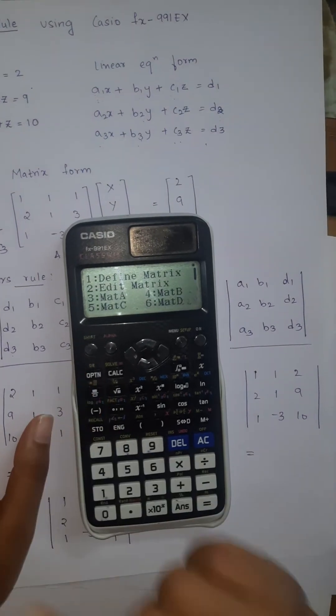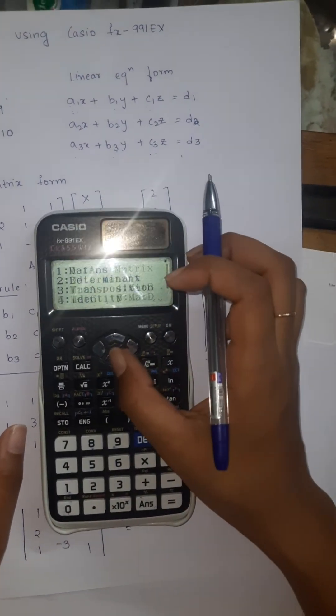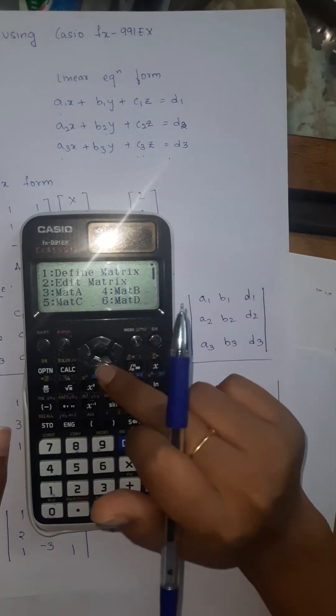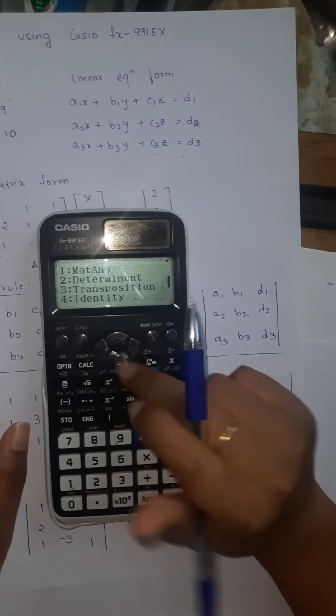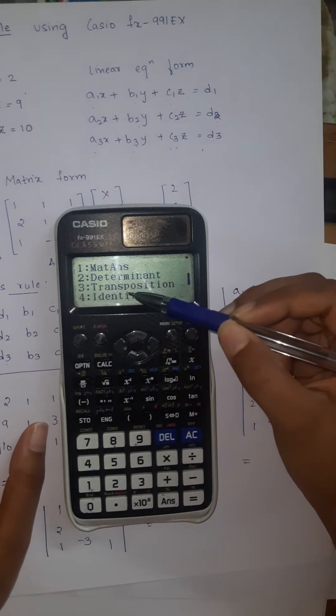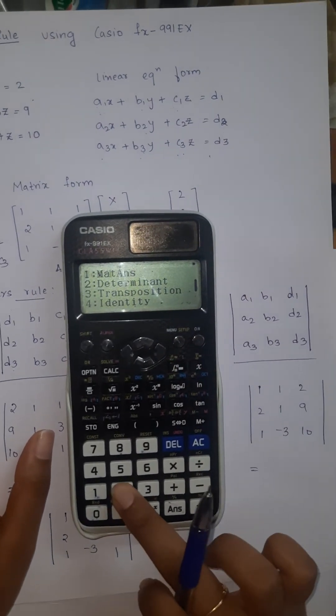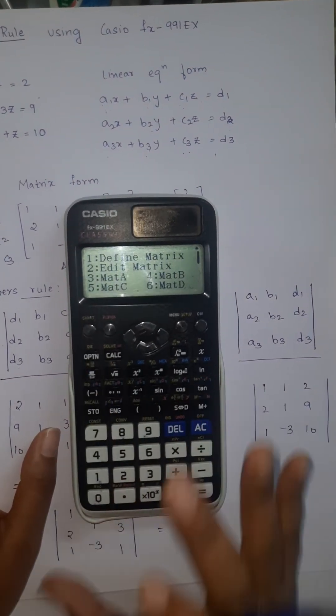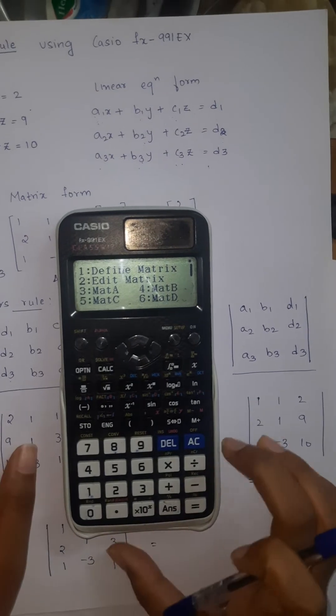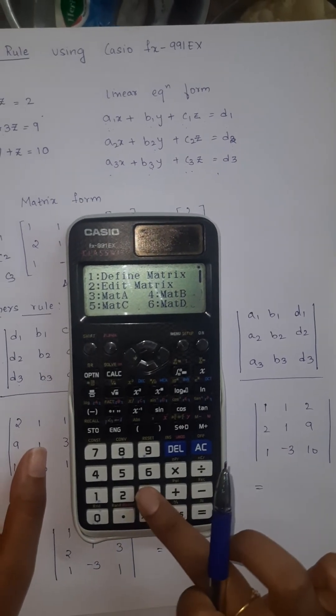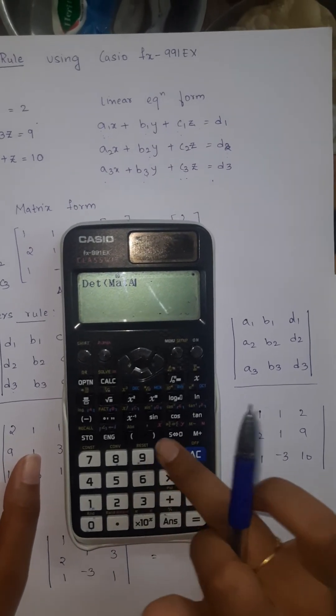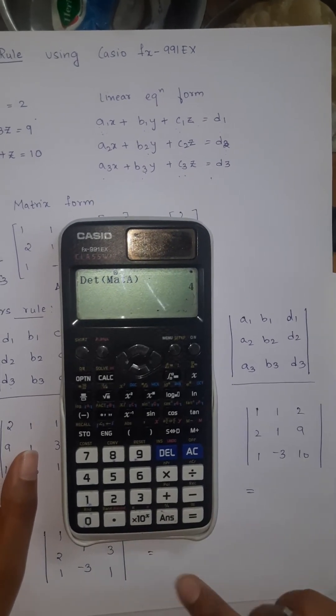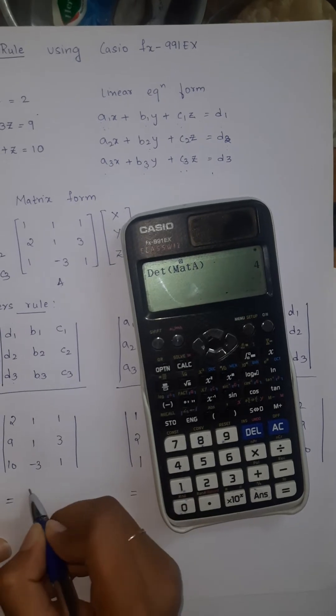Now we need to calculate it. Go to option, this is matrix calculation. Click on option 3. Go to option, now we are going to find the determinant. Determinant, that's what we want. Click on 2. Determinant of what do we want. Go to 3, close the bracket, click on equals. We got determinant equals 4.